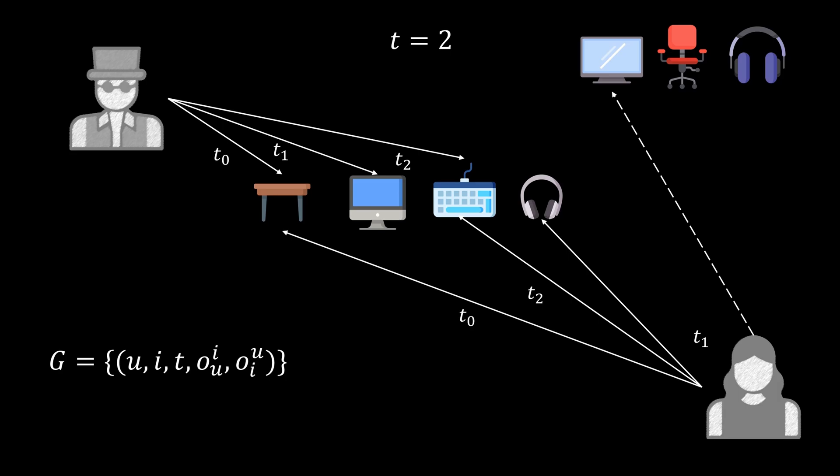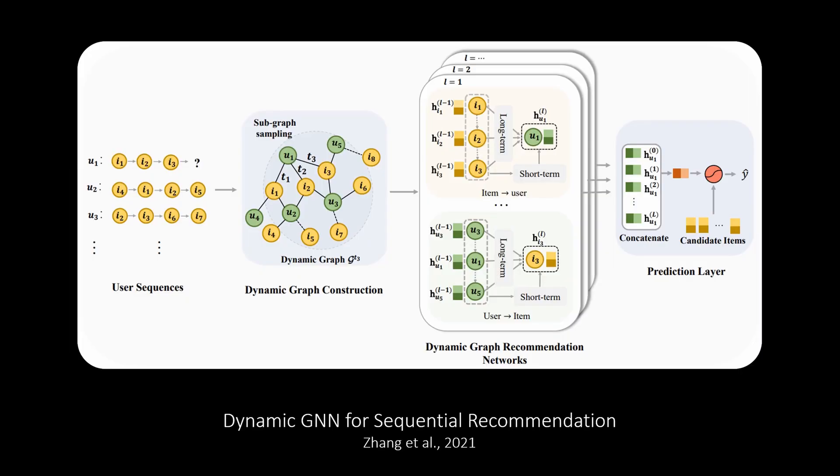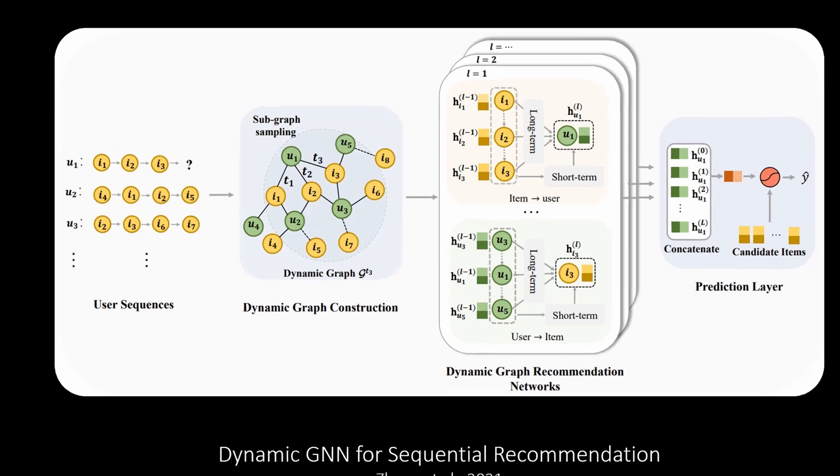So overall this is also just a bipartite graph but just with an additional temporal dimension. And additionally we have this ordering information. Two time steps later the graph might look like this. As you can imagine this graph would explode over time as it just keeps growing. Because of that the authors only sample the most recent interactions. So now I think the dynamic graph should be clear and the next step is to pass this graph through a spatiotemporal GNN which is called dynamic GNN here.